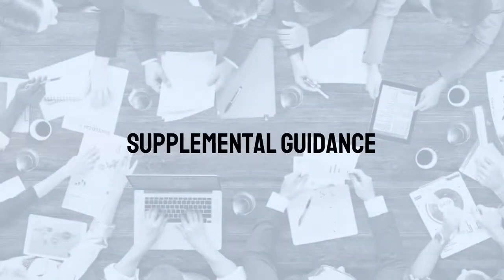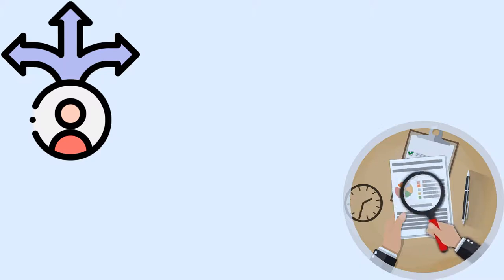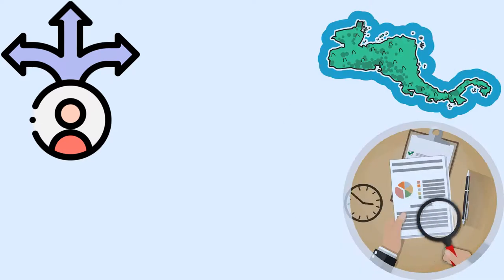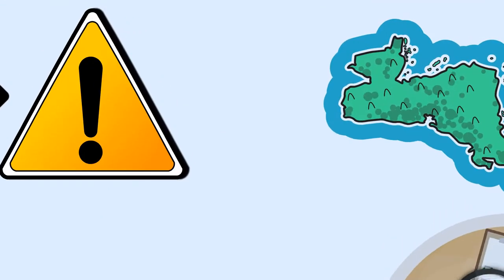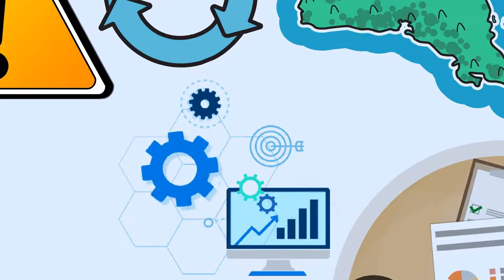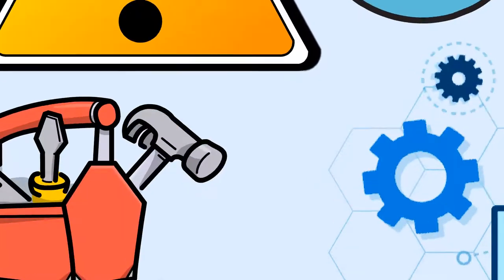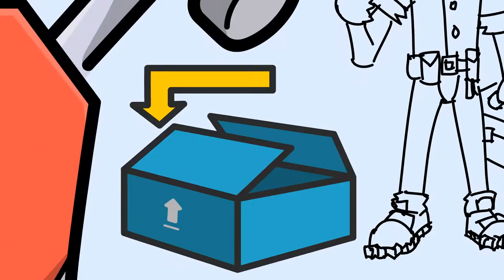Supplemental guidance provides the detailed guidance for conducting internal audit activities. These include topical areas, sector-specific issues, processes and procedures, tools and techniques, programs, step-by-step approaches, and examples of deliverables.